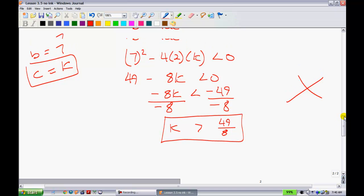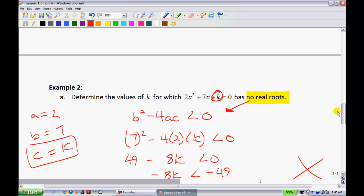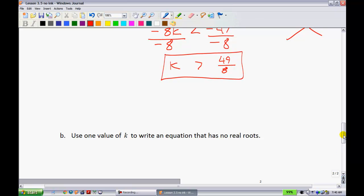So what this means is, if you were to go up here and pick a number that was greater than 49 over 8, let's pick a big one, like 100. If you put 100 in right here, then you would find out that it would have no real roots. If you pick something that was less than 49 over 8, then that would be a problem. You would end up getting either one root or two roots.